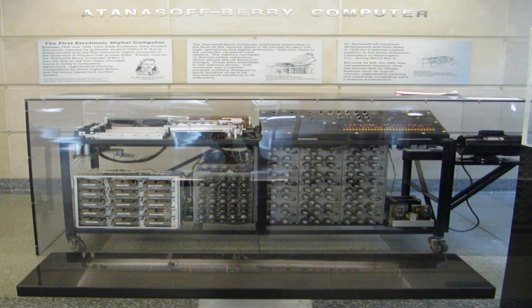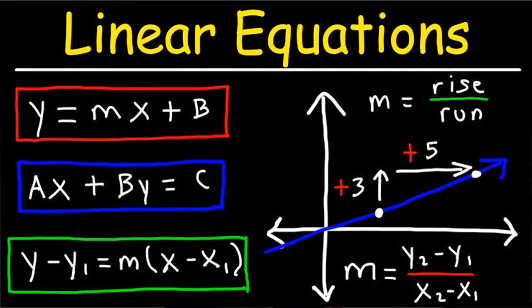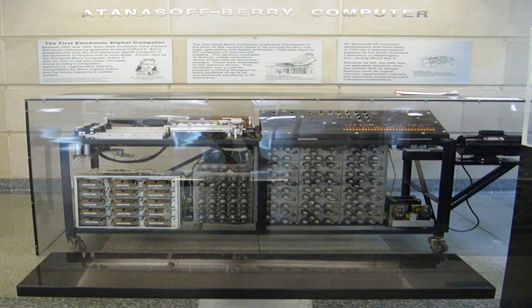Part 2: Electronic Computing. In the 1930s and 40s, the first electronic computers were developed, beginning with the Atanasoff-Berry computer, which was designed to solve systems of linear equations. Although it was not a true general-purpose computer, the work of this incredible technology paved the way for modern computers to come.